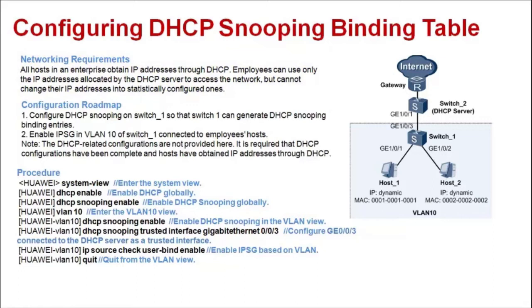The configuration roadmap is as follows: configure DHCP snooping on Switch 1 so that Switch 1 can generate DHCP snooping binding entries. Enable IPSG in the VLAN of Switch 1 connected to an employee's host. The DHCP-related configurations are not provided here.